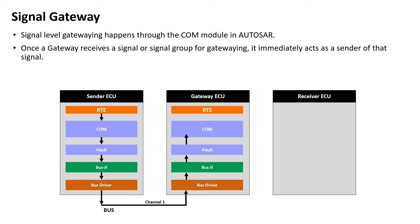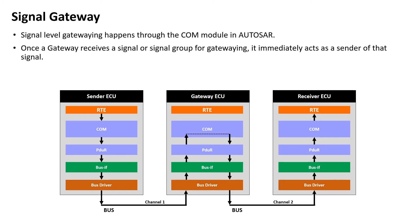The gateway ECU receives this CAN message and forwards it to the upper layer, where it reaches the COM. The gateway ECU knows that this CAN signal is to be forwarded to the receiver ECU, so it will copy this signal to another CAN message going to the receiver ECU on CAN channel 2. It can be configured to be sent in various ways — either in a separate CAN message or in any existing CAN message by reserving 2 bytes for this particular signal. The receiver ECU will then receive this CAN message with the actual signal sent from the sender ECU.